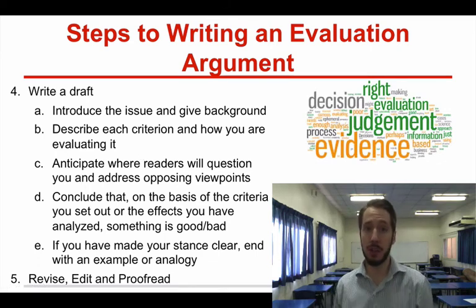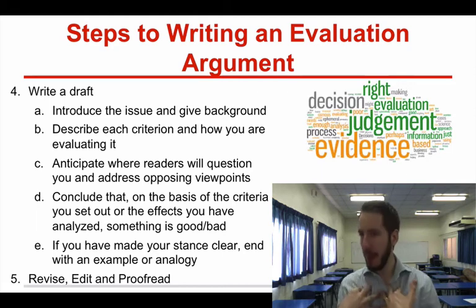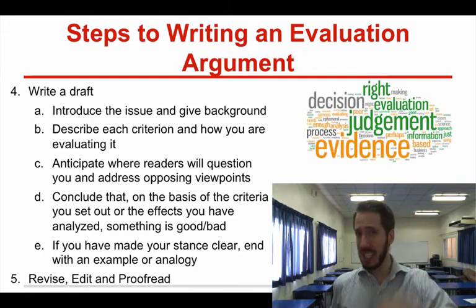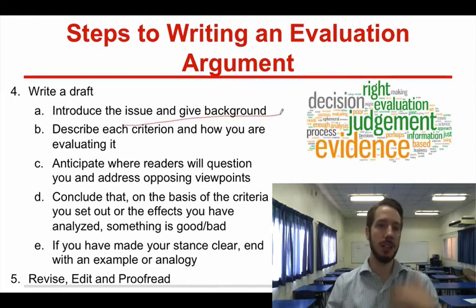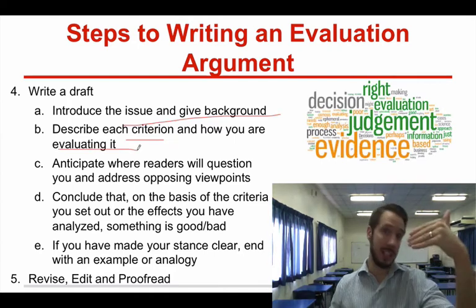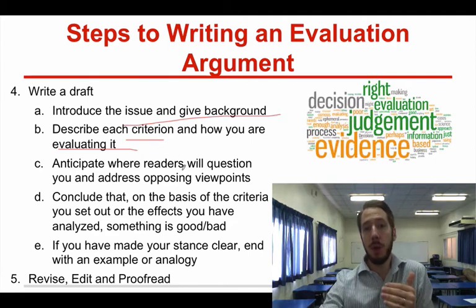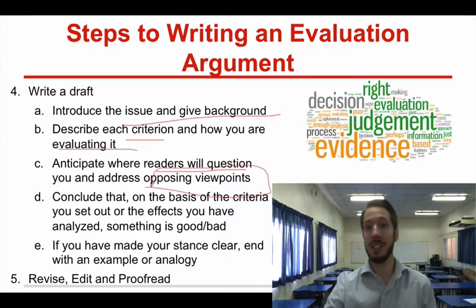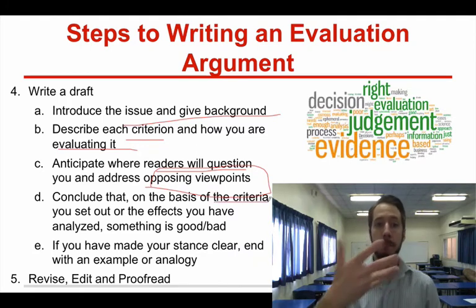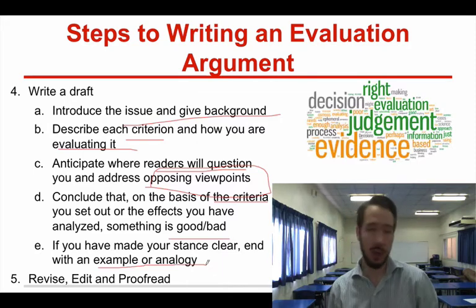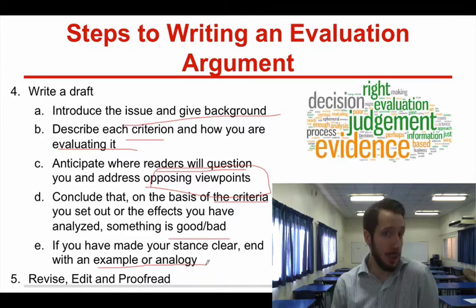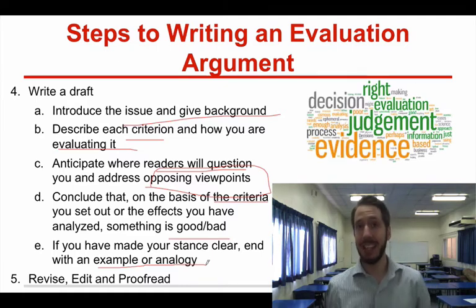Once you've thought about all that, write your draft. Here's a cookie-cutter pattern: introduce the issue and give some background. Describe the criteria you're going to use and how you'll evaluate if that criteria is effective or superior. Think about when your readers are going to question you — the counterclaims they're going to make — and address those viewpoints. After that, conclude based on the criteria you've set out that something is either good or bad. Prove that your criteria is superior, and end with an example or analogy in your conclusion to tell your readers what to do or how they can affect this particular topic. Then revise, edit, and proofread. That is how you write an evaluation argument.